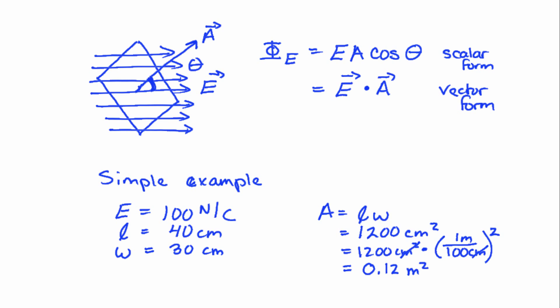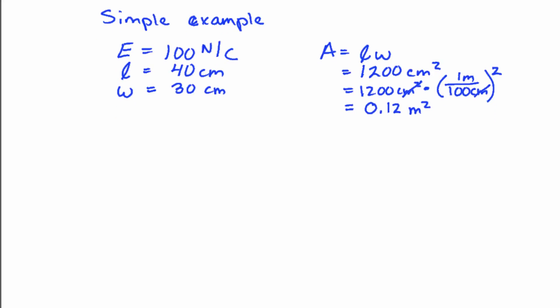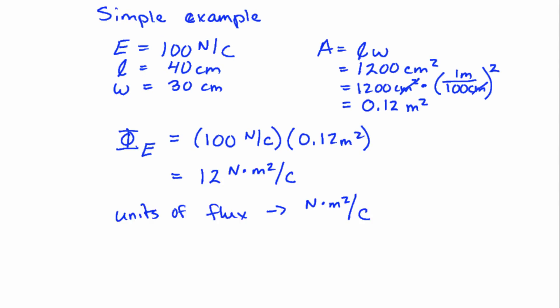So now that we have our electric field and our area, we can go ahead and calculate the electric flux through the surface that I drew above. So my electric field is 100 newtons per coulomb times my area, 0.12 meters squared. Put that into our calculators, and we find 12 newton meters squared per coulomb. So that means the unit for electric flux is newton meter squared per coulomb.